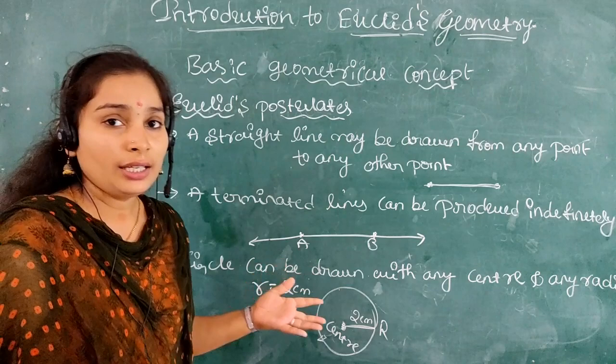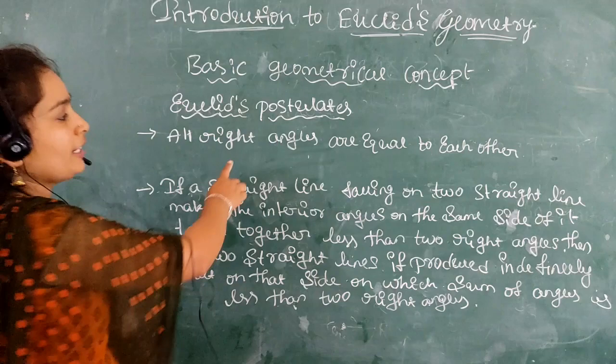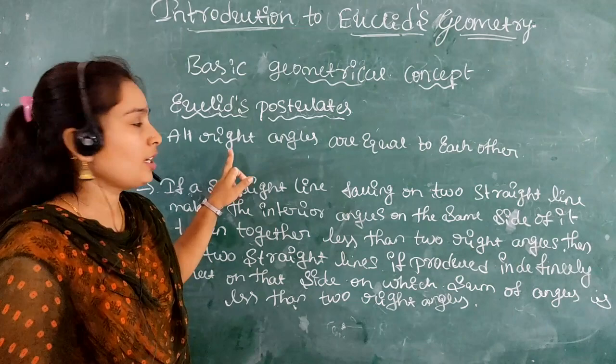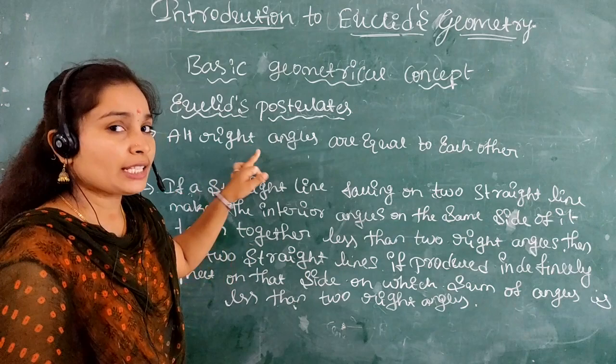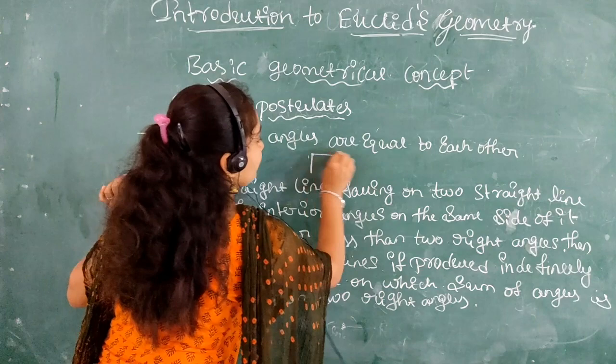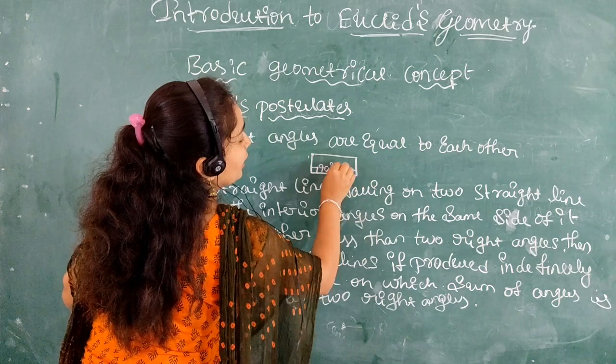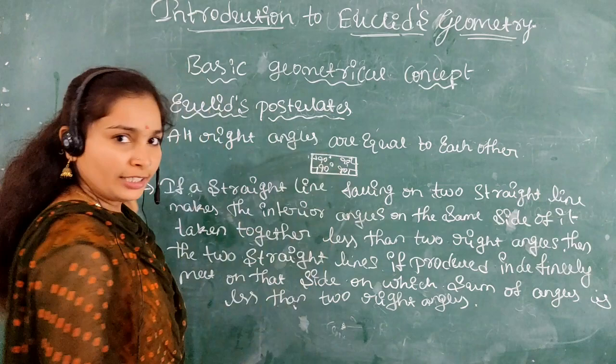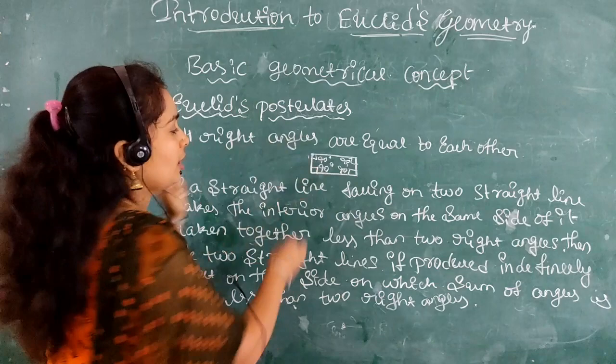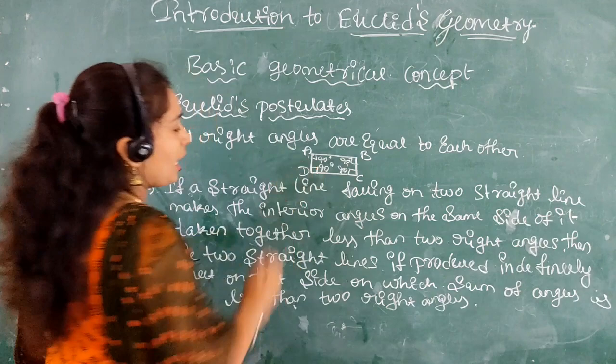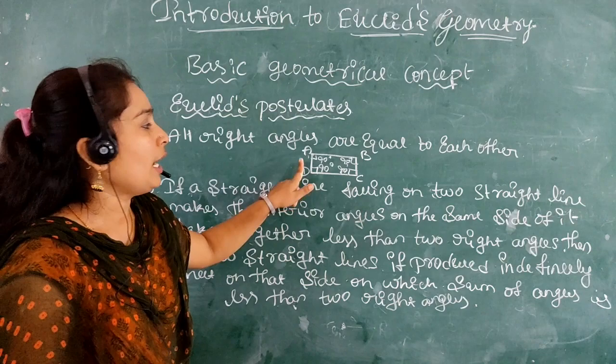The fourth postulate: all right angles are equal to each other. Take a rectangle as an example — each angle is 90 degrees, so angle A equals angle B equals angle C equals angle D. All the right angles in the rectangle are equal to each other.